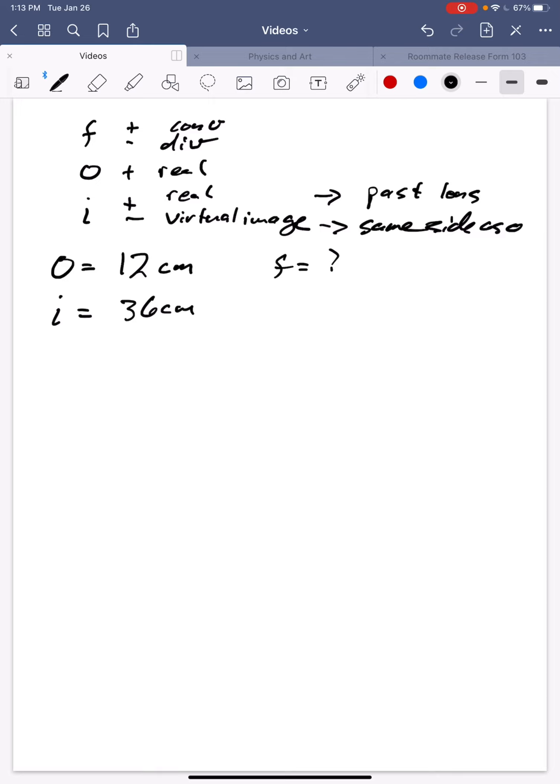And again, I could use my equation, so I'd say 1 over F in this case equals 1 over I plus 1 over O, which would be 1 over 12 centimeters plus 1 over 36 centimeters. I have to get a common denominator, so that's 3 over 36 plus 1 over 36, 4 over 36 centimeters. So F equals 36 over 4 or 9 centimeters.